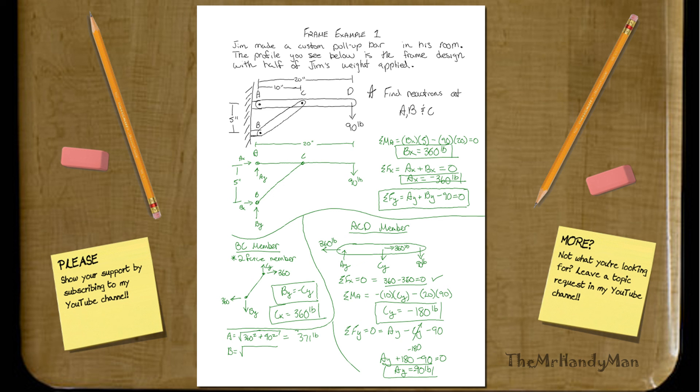You're going to have B is equal to 360 squared plus 180 squared is equal to 402.5 pounds. And C will equal square root of 180 squared plus 360 squared is equal to, once again, 402.5 pounds. And it shouldn't be a surprise to us that both the force reactions at B and C are the same because it's a two-force member.